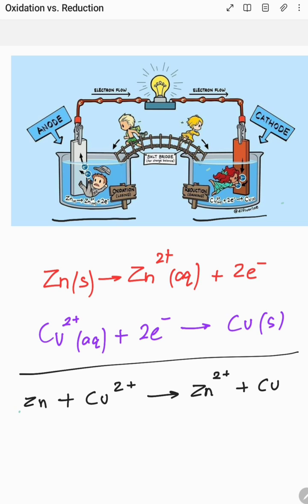On the left-hand side, we have a zinc electrode immersed in an aqueous solution of zinc ions. On the right-hand side, we have another copper electrode immersed in an aqueous solution of copper ions.